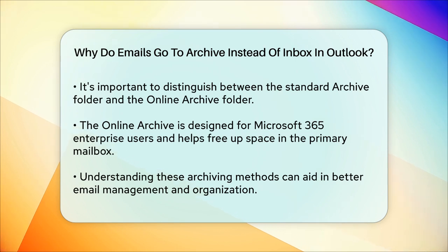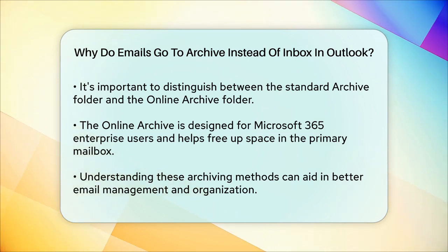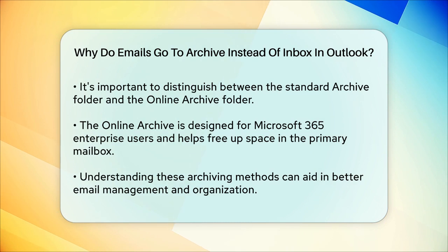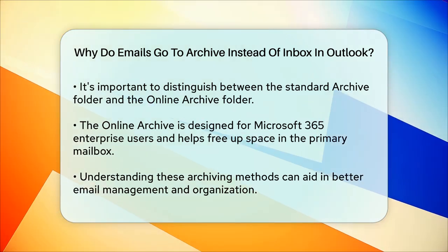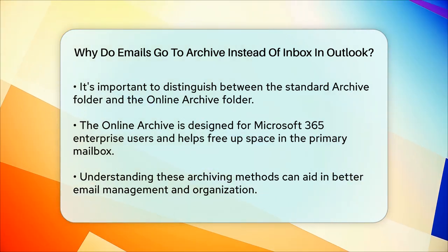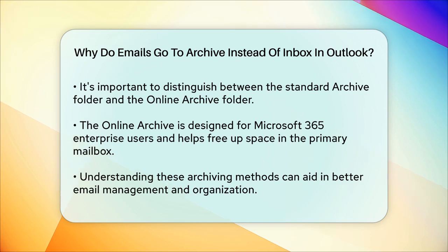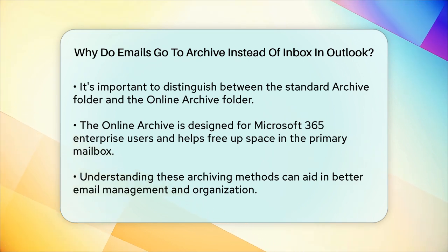In summary, emails go to the Archive folder in Outlook either because you've manually moved them there, due to auto-archiving settings, or as a result of rules and policies set by your administrator. Understanding these differences can help you manage your emails more effectively and keep your inbox organized.